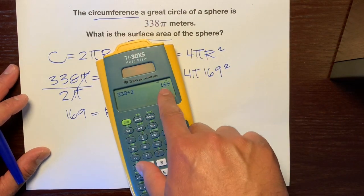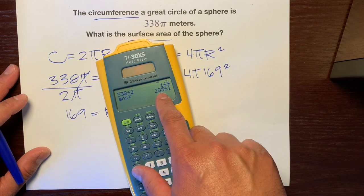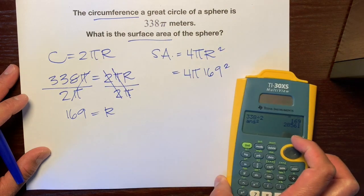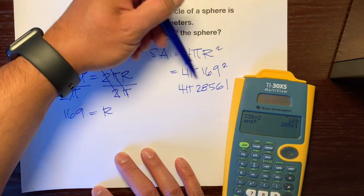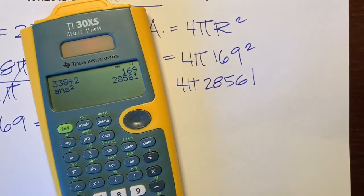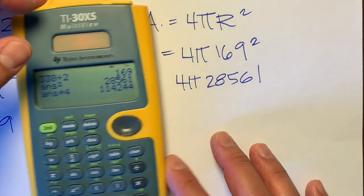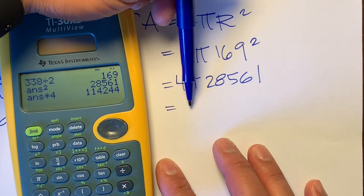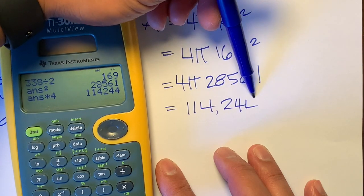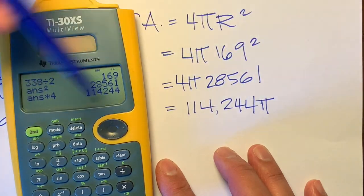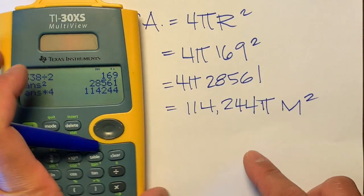So let's take our 169 and square it, which is 28,561. We've got 4π times 28,561. We're going to multiply that by 4, which is this gigantic number. So our final answer would be 114,244π meters squared. Surface area is how many squares can fit.